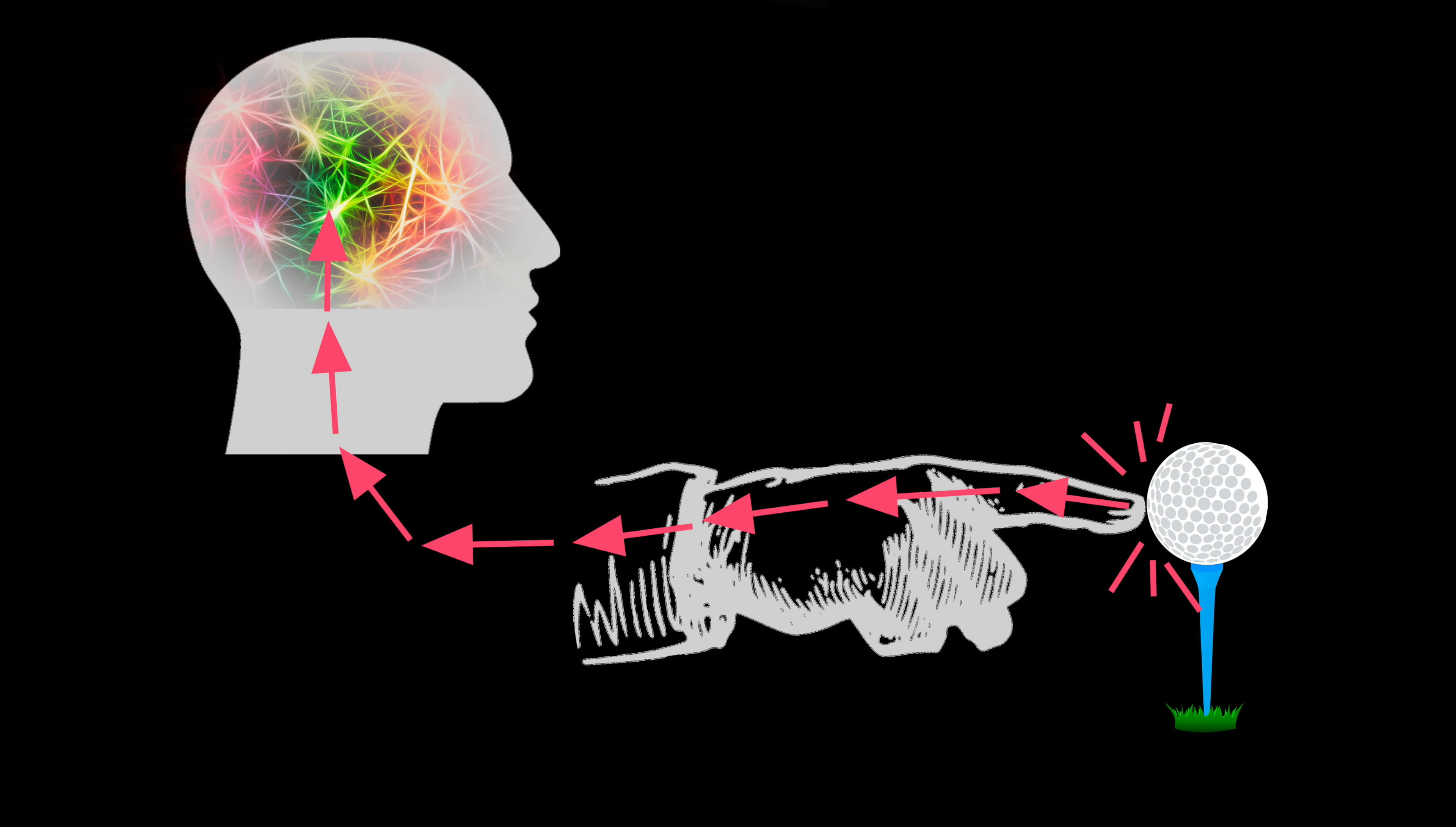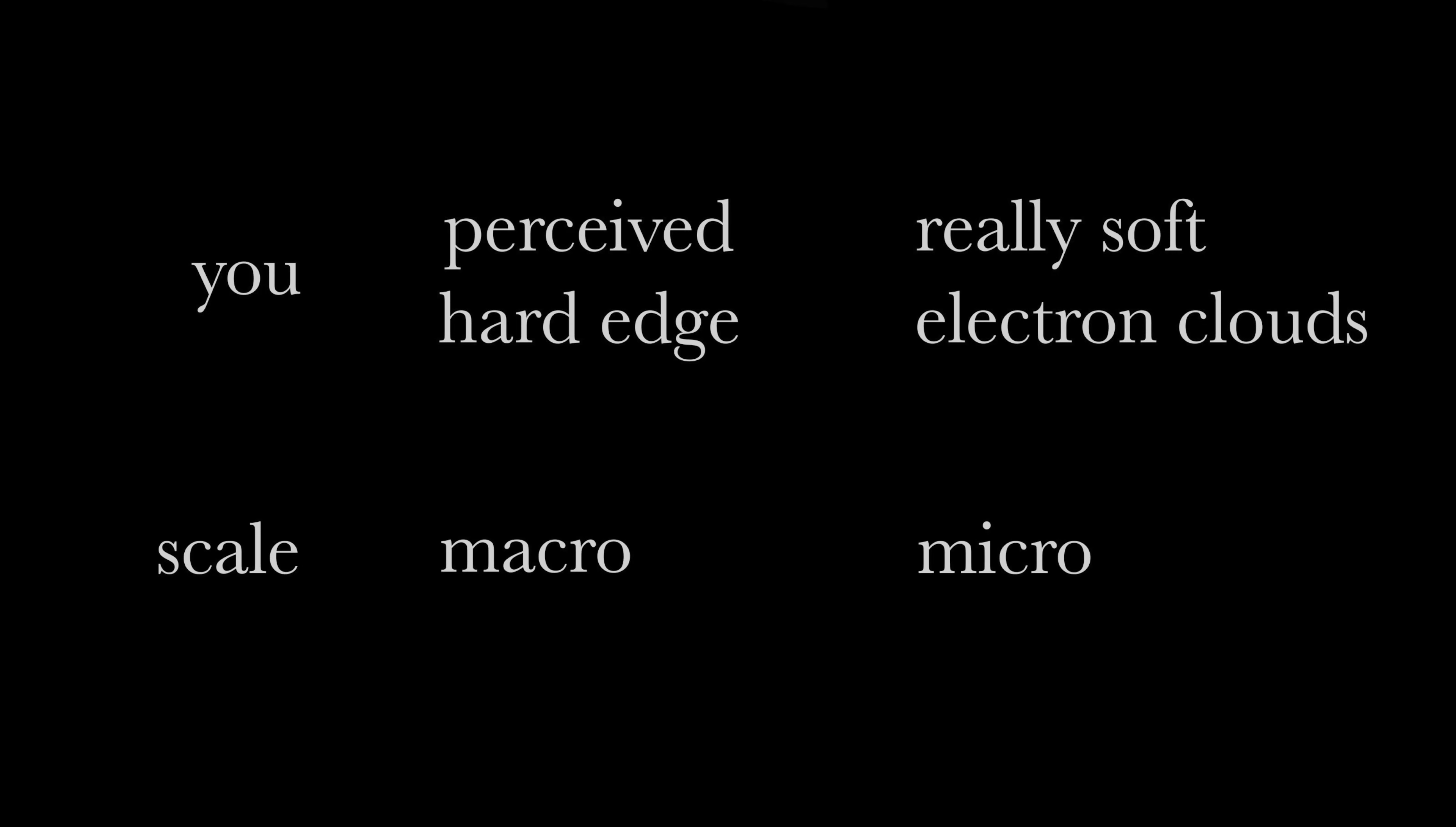Also, the interaction sends signals to your brain. The signals say that the golf ball is something tangible. Thus, you think that the golf ball has a hard edge, but it is really gazillions of soft electron clouds in the golf ball repelling those in your finger. It's hard on a macro scale, but wispy on the micro.